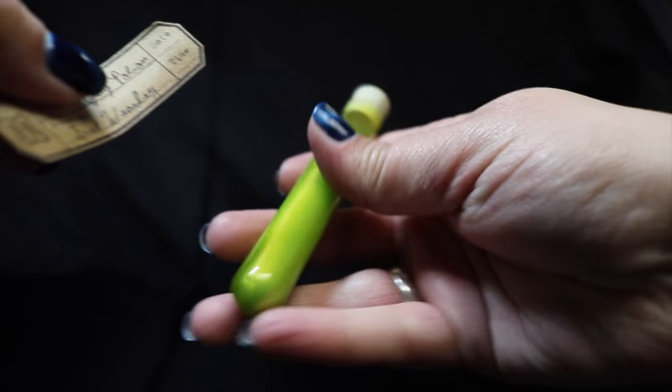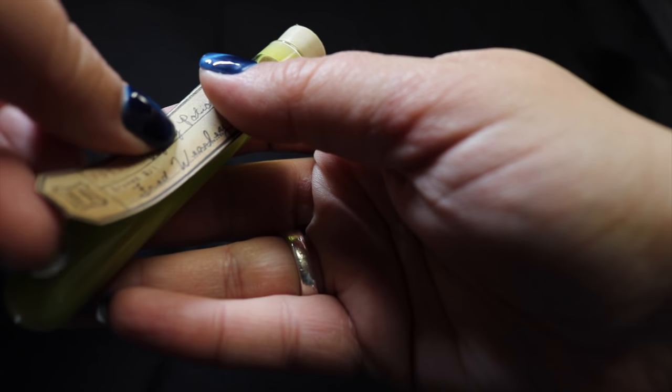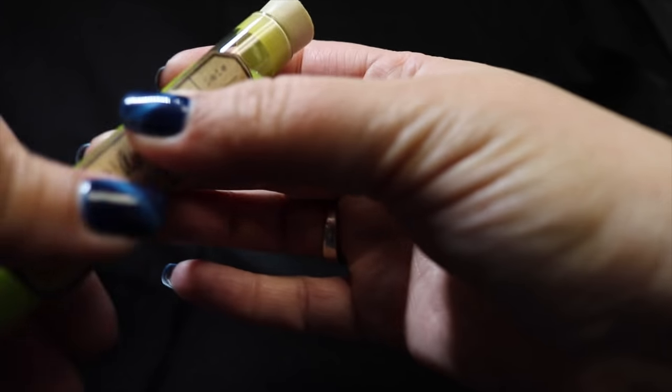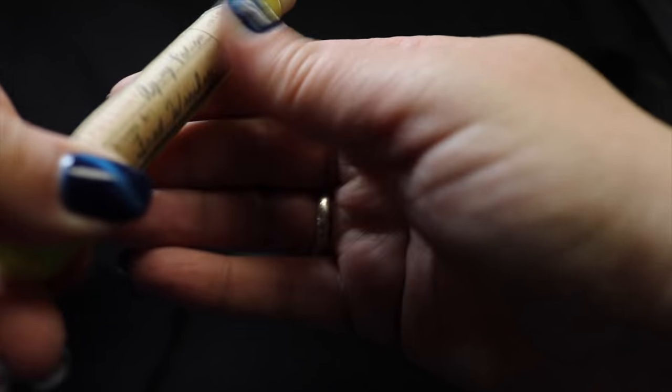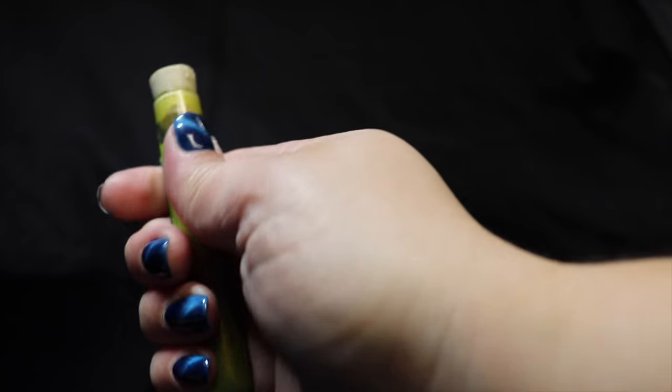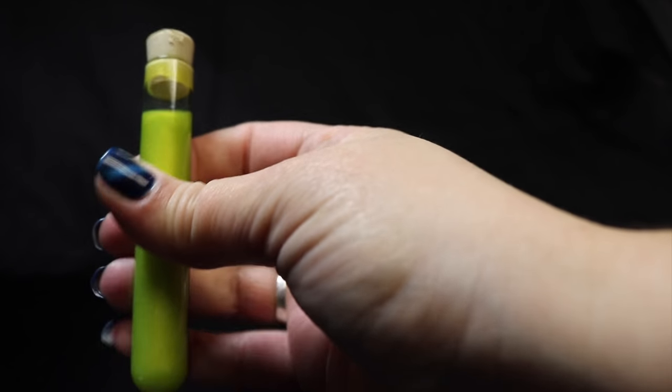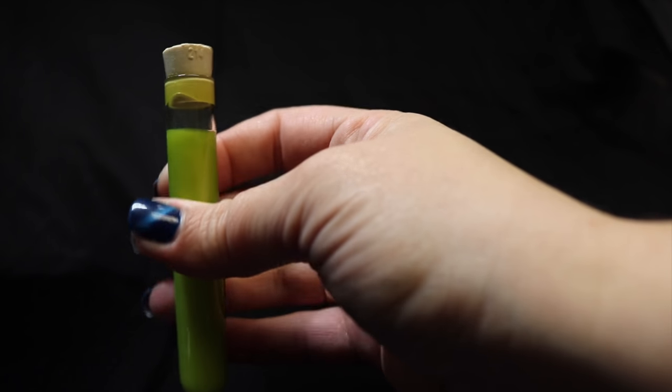All we're going to do is line it up and stick it on. Anytime you put a label on a rounded container like this, it helps if you hold it in your hand so that the heat can help adhere it to the curve. But once you get it stuck down, it's pretty good to go.